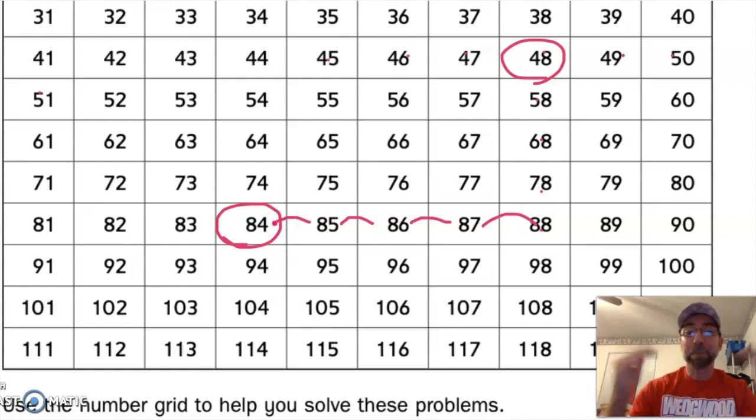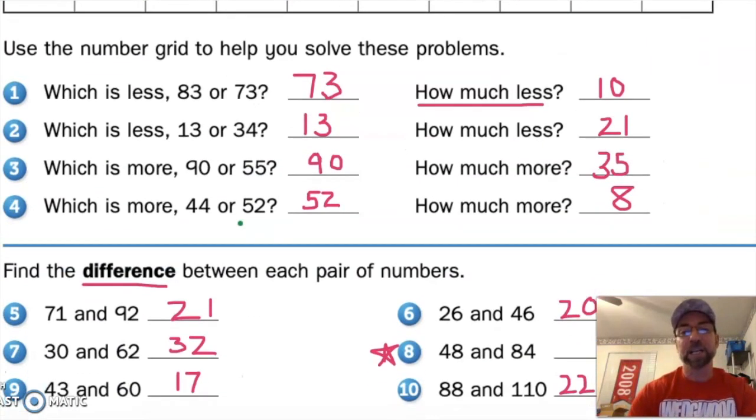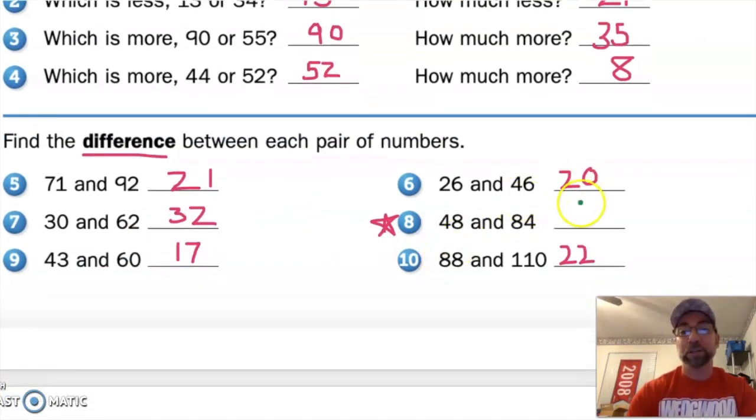If I stopped before the number 84, it would look like this. 10, 20, 30. Don't want to go past it. 31, 32, 33, 34, 35, 36. I got the same exact answer no matter what strategy I used. So the answer to number 8 is 36.